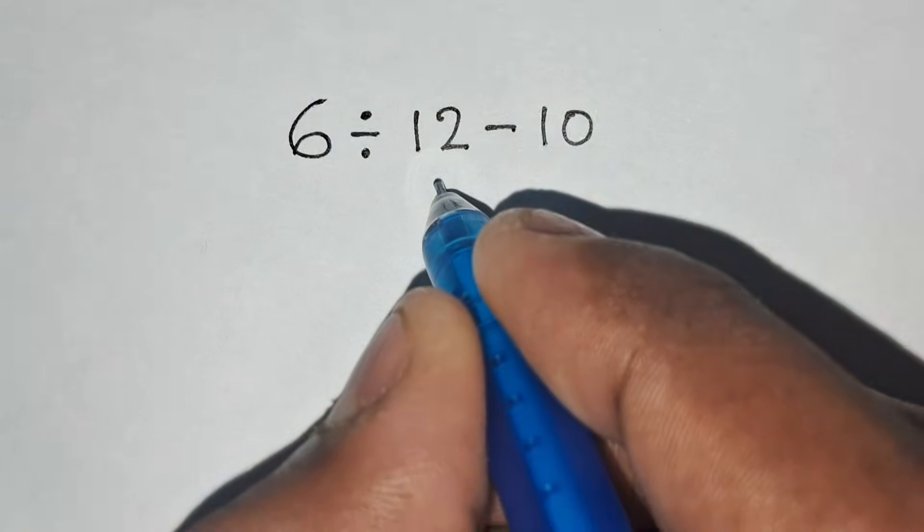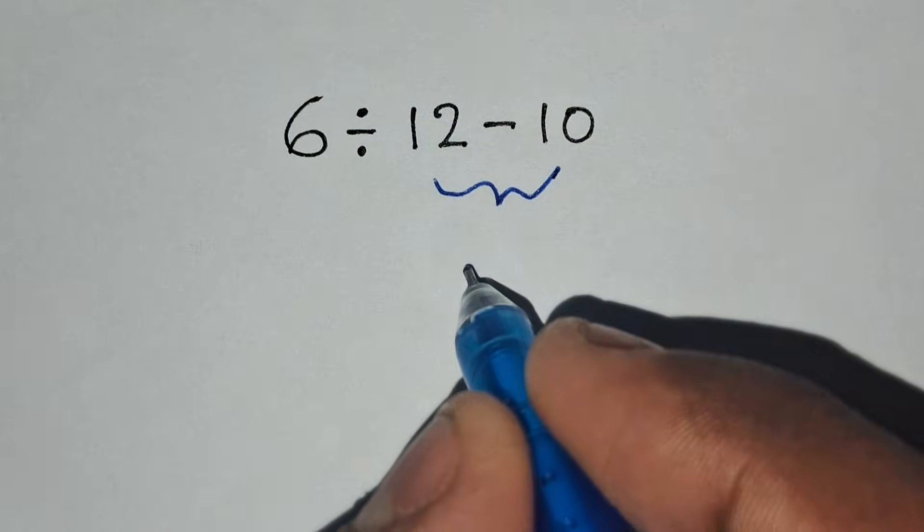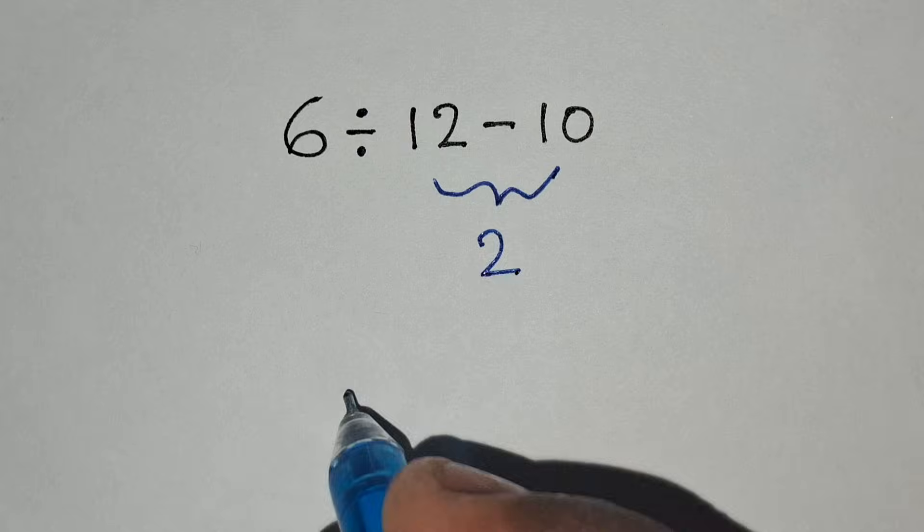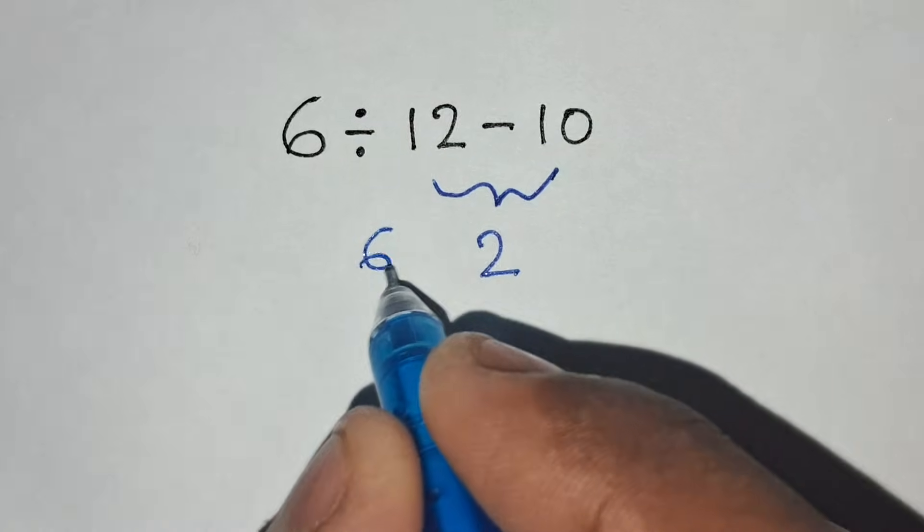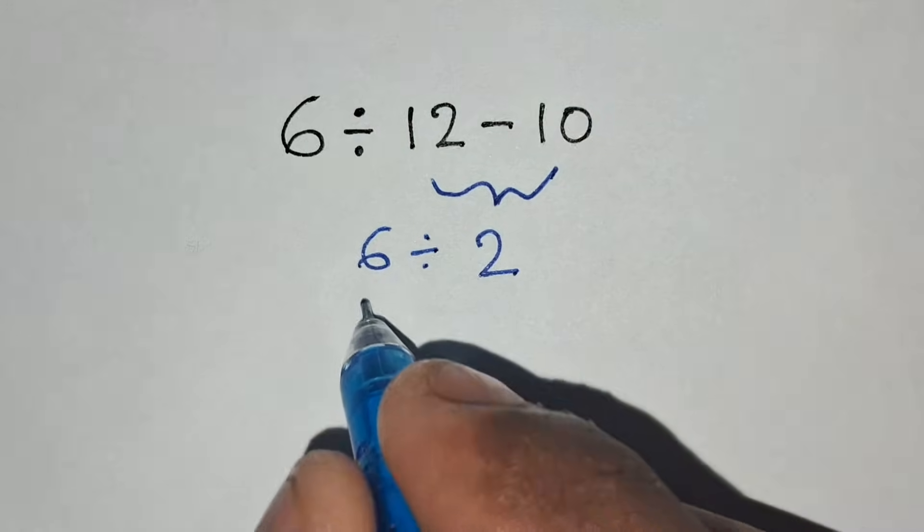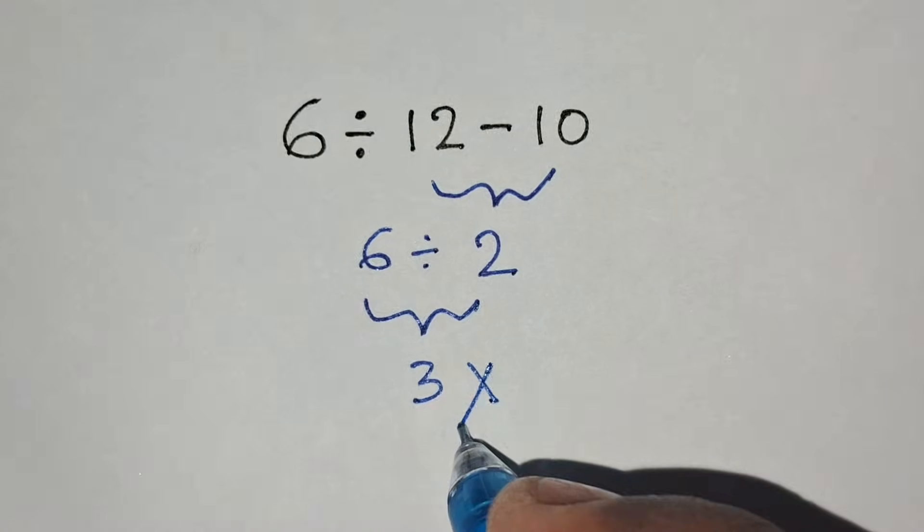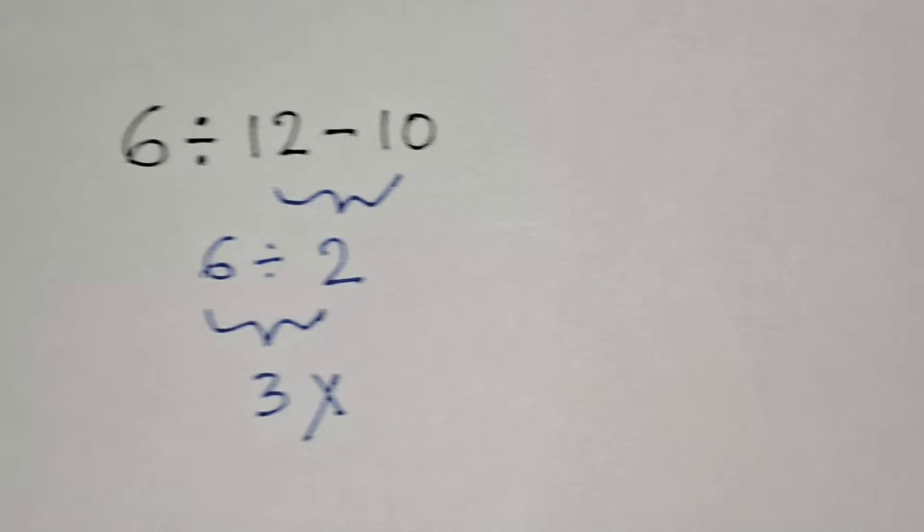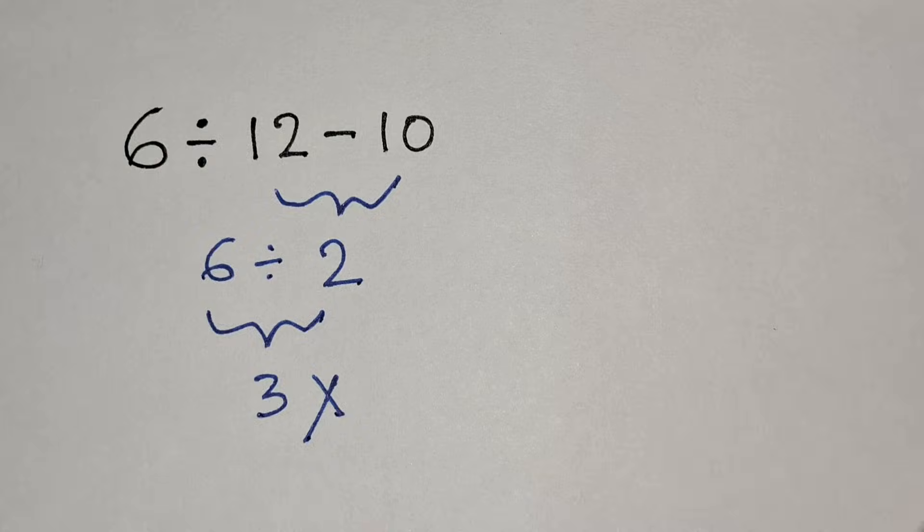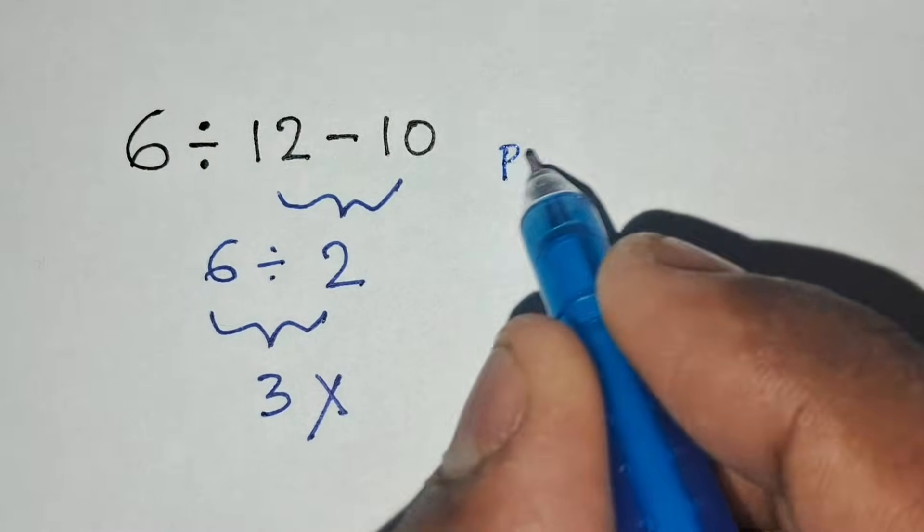If we incorrectly solve this by doing 12 minus 10 equals 2, then 6 divided by 2 equals 3, we get 3. But 3 is not the correct answer for the expression according to the order of operations, which is called PEMDAS.